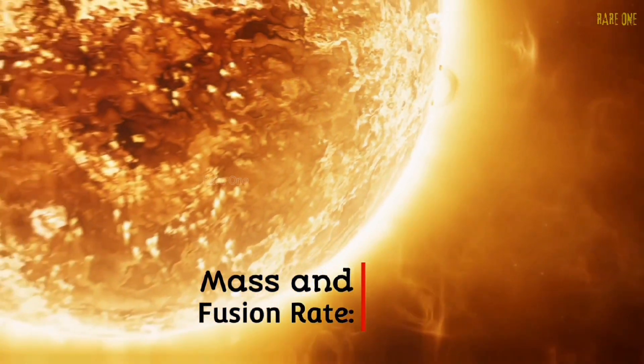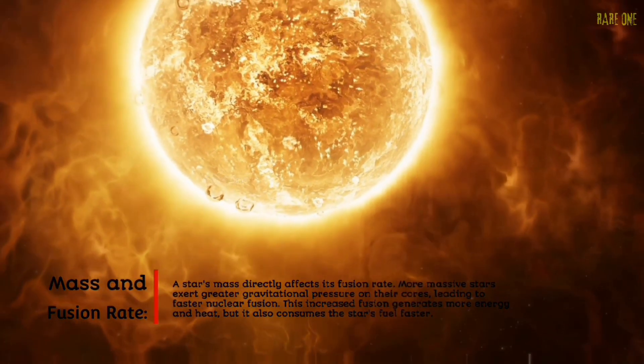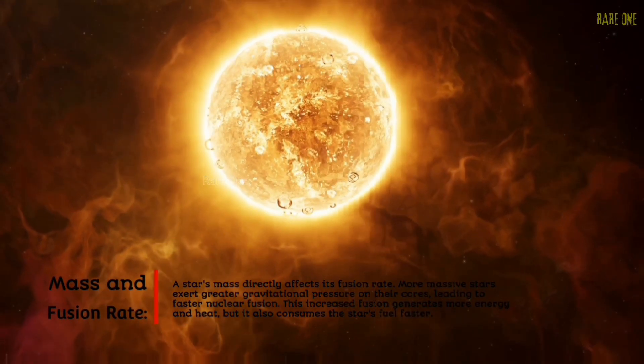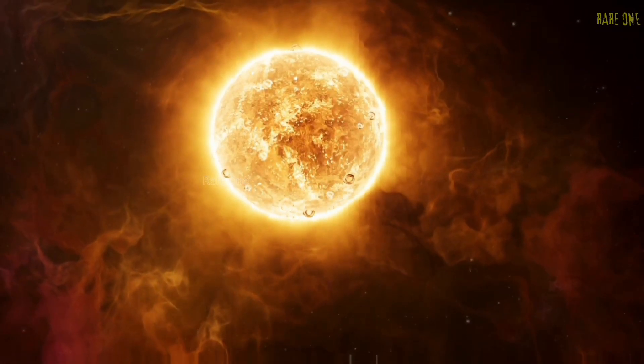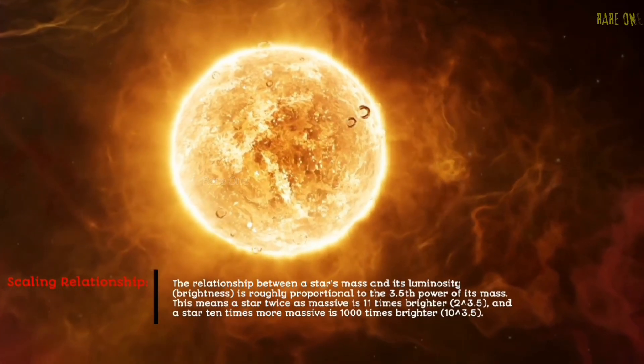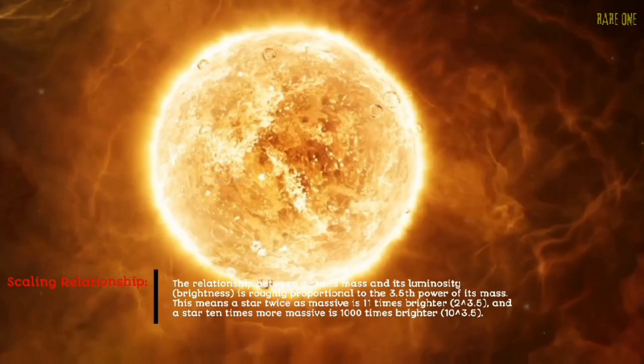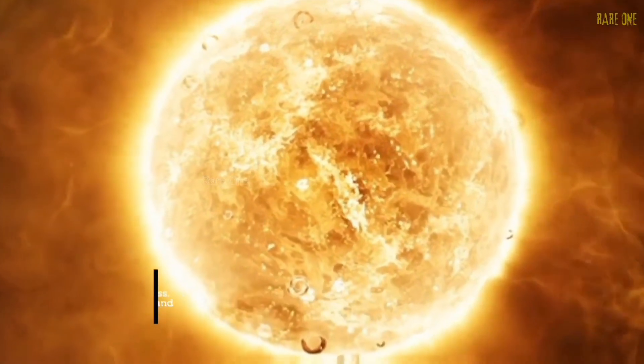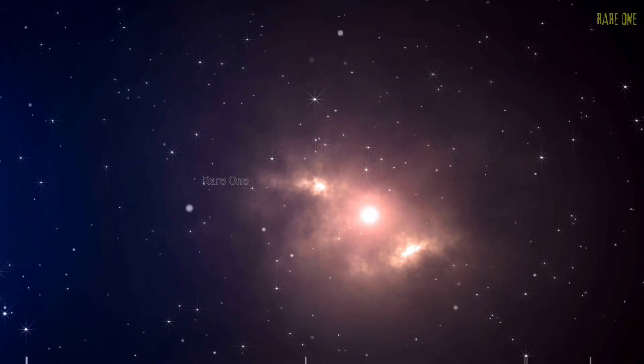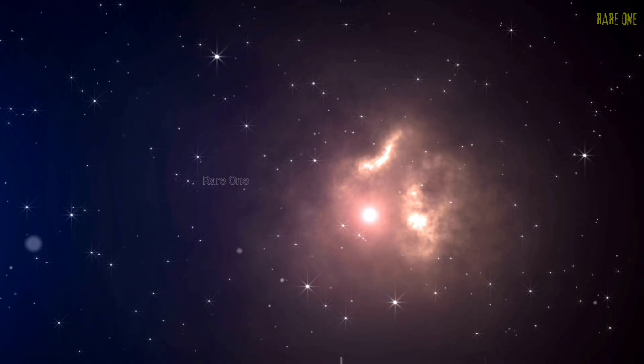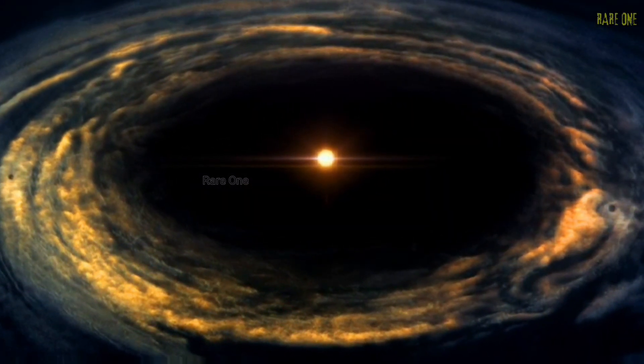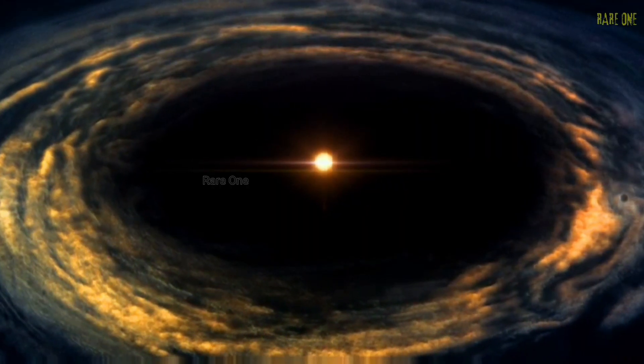But here's the cosmic irony: these stellar giants are living on borrowed time. A star twice as massive as our sun burns through its fuel eight times faster. A star ten times more massive? It lives less than one percent as long. While our sun will shine for 10 to 12 billion years, these massive stars flame out in just a few million years—cosmic mayflies. Meanwhile, in the quieter corners of this stellar nursery, smaller clumps are slowly, patiently growing. One of these modest clumps is accumulating matter at just the right rate, in just the right place. This clump will become our sun.